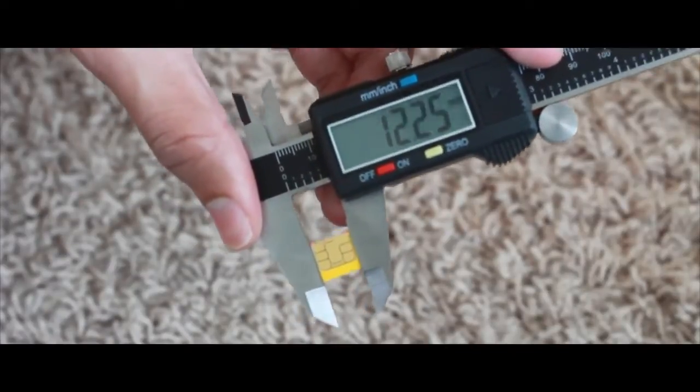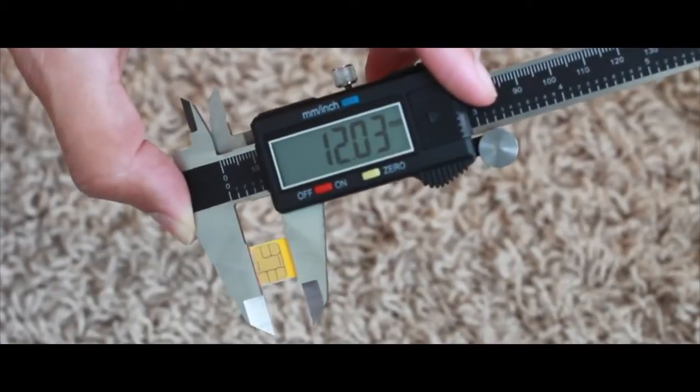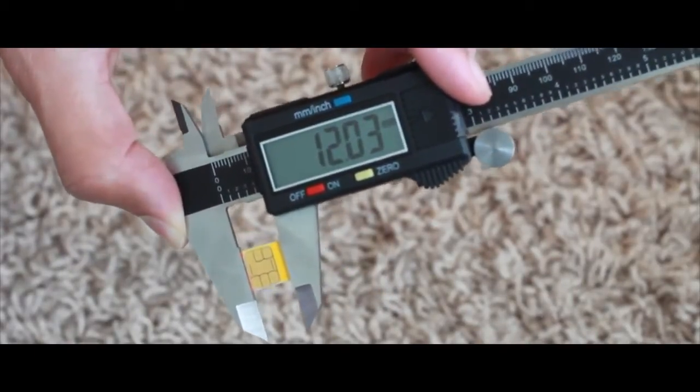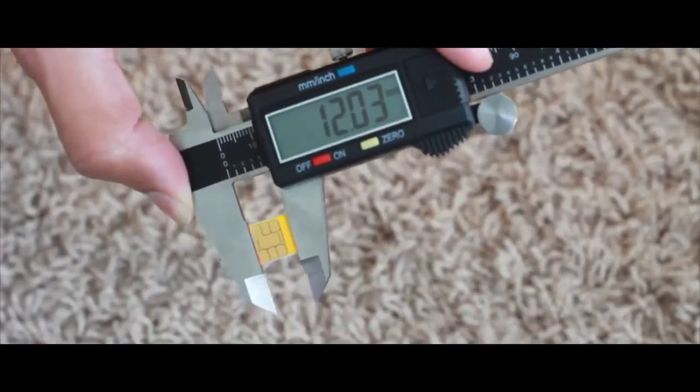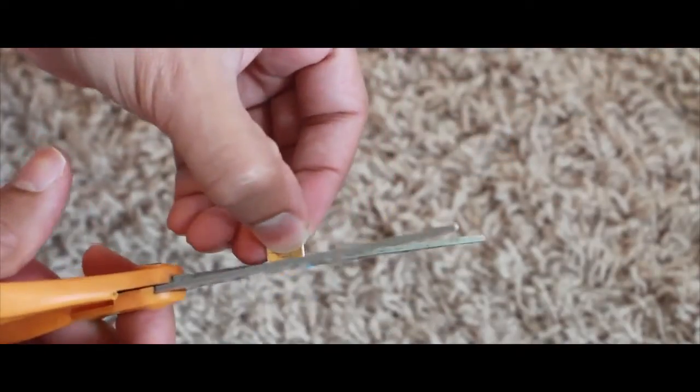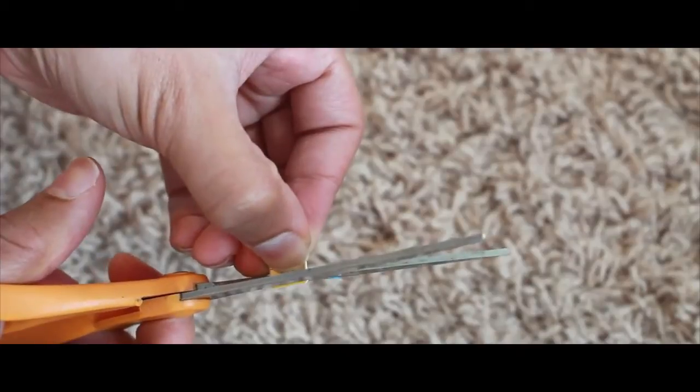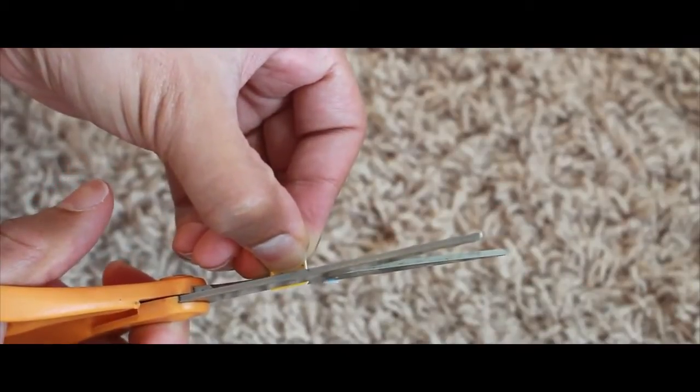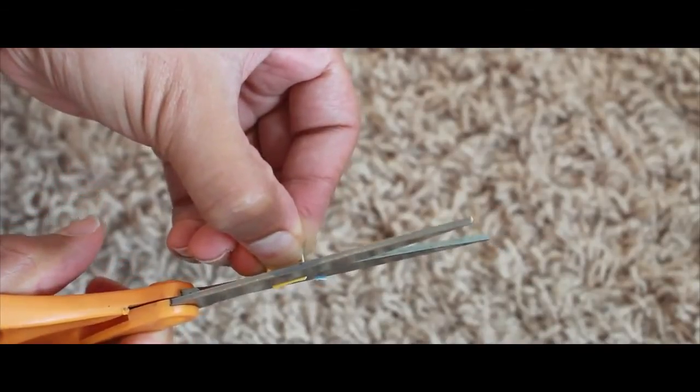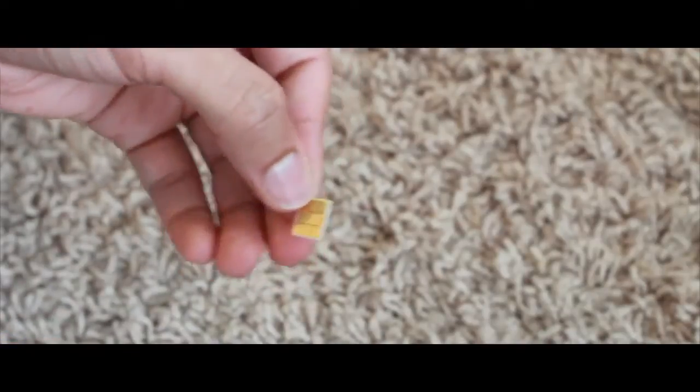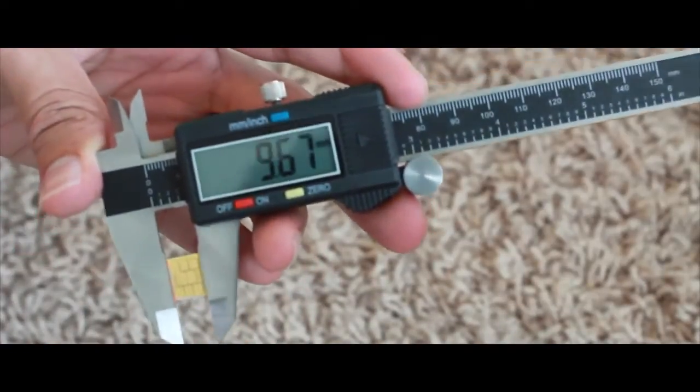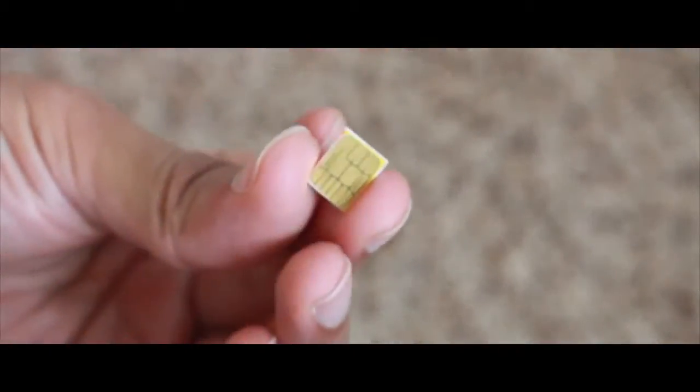Now here's the other side: it's 12.03 millimeters, so we need to trim that down as well to meet the specs for the nano SIM. Again, you want to be really careful not to cut into the actual chip itself. Let's measure: now we're at 9.67. We still have a little ways to go, but it's really close to the edge there.